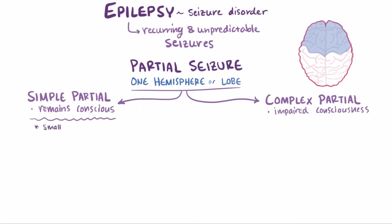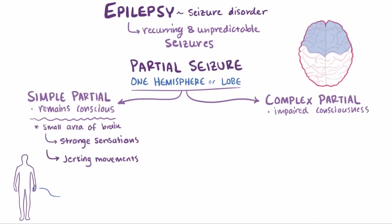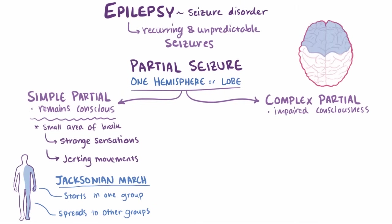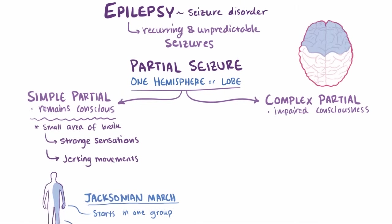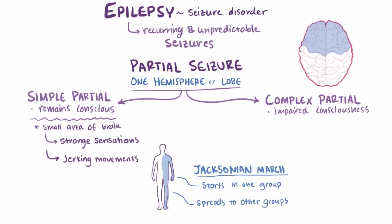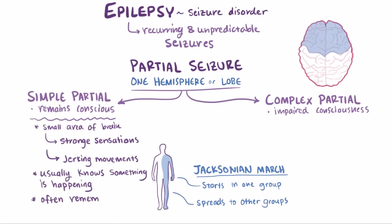Simple partial seizures typically affect a small area of the brain and can involve the person experiencing strange sensations like hearing or tasting something, but can also involve jerking movements in specific muscle groups. If the jerking activity starts in a specific muscle group and spreads to surrounding muscle groups as more neurons are affected, it's referred to as a Jacksonian march. Typically the person is conscious, meaning awake and alert, and will usually know that something's happening and will remember the seizure afterwards.